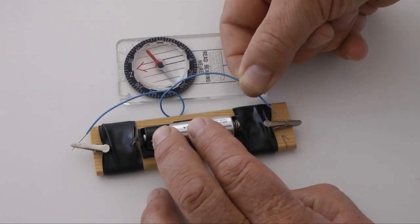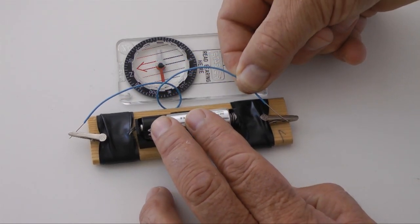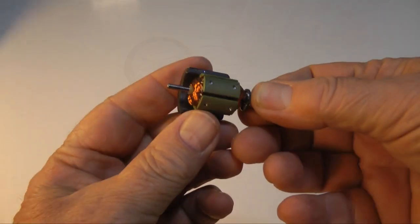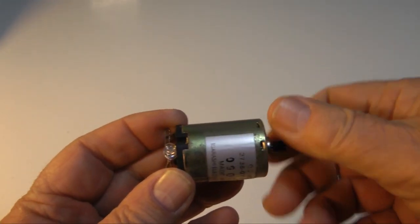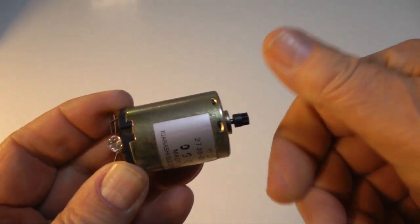Electricity flowing in a coil of wire creates a magnetic field. Also, if you keep a magnet in motion close to a coil of copper wire, electricity will flow in the wire. Generators use this principle.